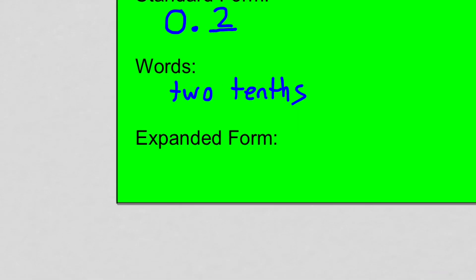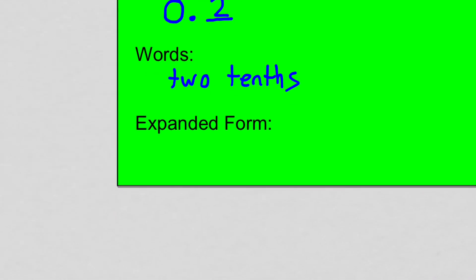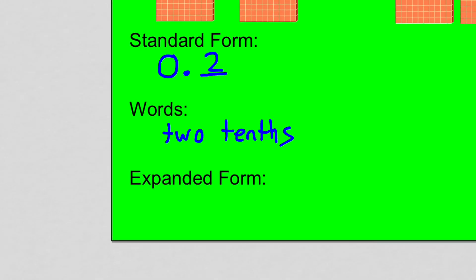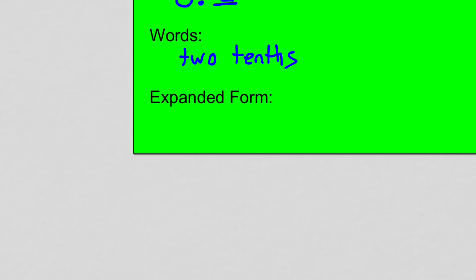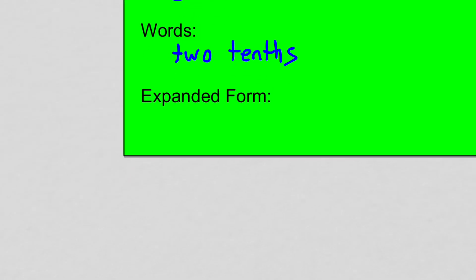In expanded form, we want to show what this place value looks like and how much of it we have. We have the tenths, and we have two groups of those tenths. So we'd say two times one over ten, or two groups of one tenth. When you're putting the number in expanded form, you're representing its place value and you're showing how much of that place value you have.